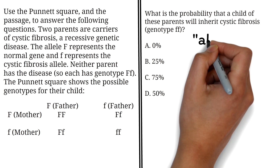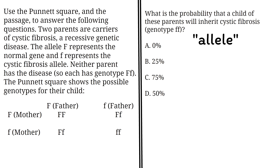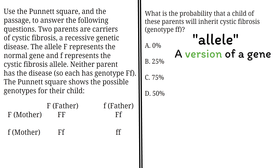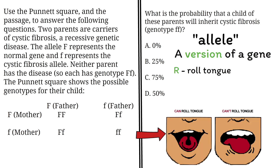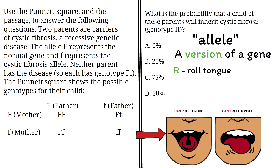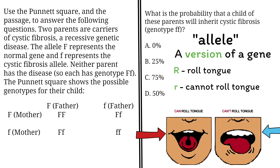First, we'll talk about the allele. An allele is a version of a gene. For instance, there's a gene that we inherit from our parents that affects whether we can roll our tongue. One version, or allele of that gene, lets you roll your tongue — we'll call that version capital R. The other version, or allele, doesn't let you roll your tongue — we'll call that version lowercase r.